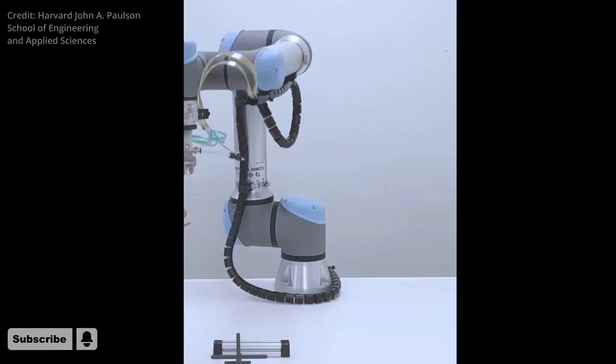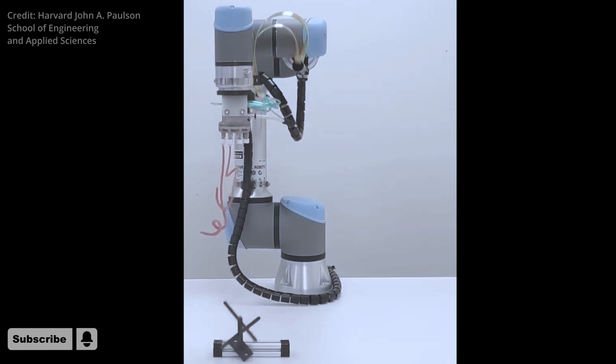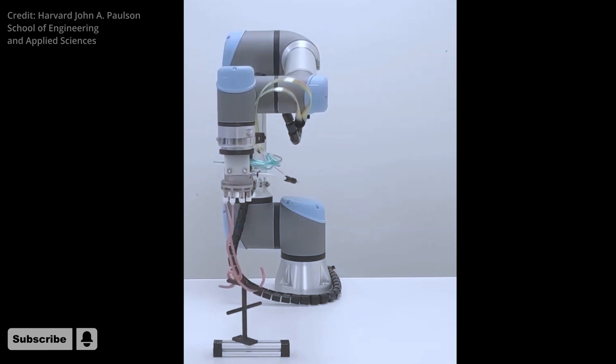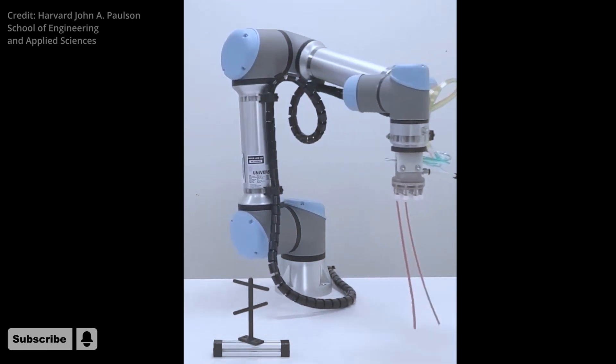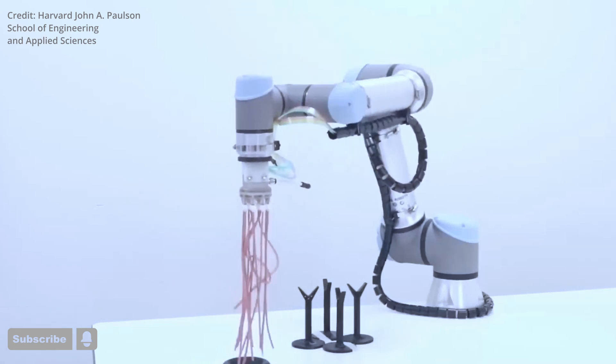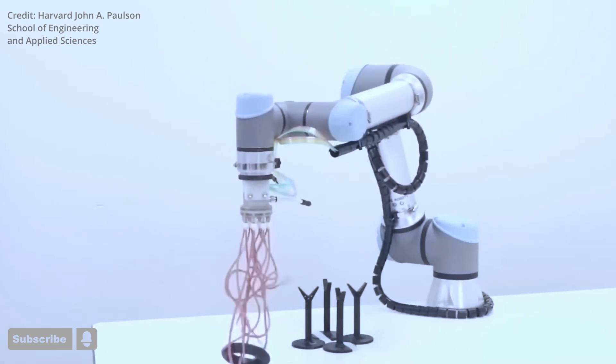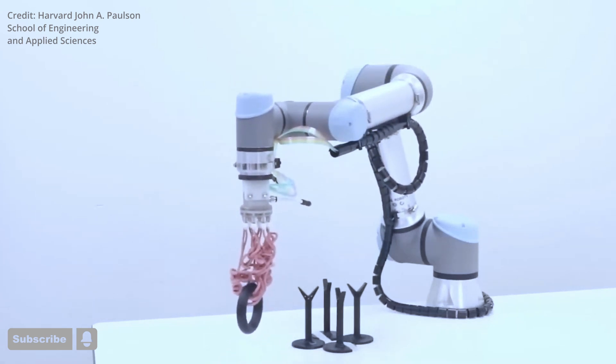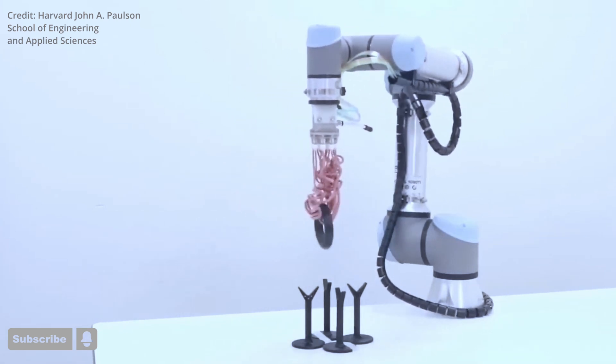The individual filaments that make up the tentacles aren't very strong on their own. However, when used as a group, these filament tentacles can firmly grasp and hold items of all shapes and sizes. The tentacles are rubber tubes that curl up when inflated because one side of the tubes has thicker walls than the other.